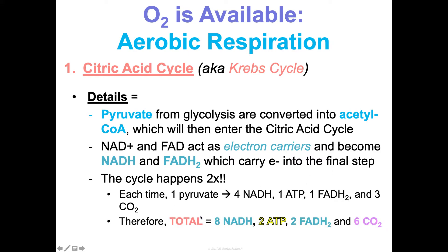So once we've done the Krebs cycle twice, we get eight NADH, two ATPs, two FADH2, and six CO2 total.